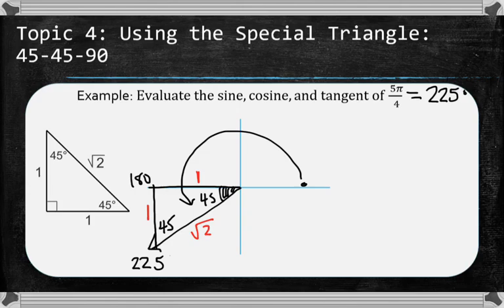Thinking about positives and negatives, the hypotenuse is always positive. The 1 going down is parallel to the negative y-axis. So this is a negative 1 down here. And then the 1 going left is also negative because it lies on the negative x-axis.